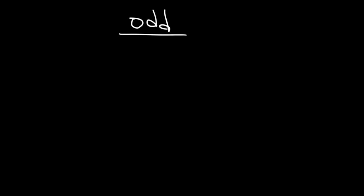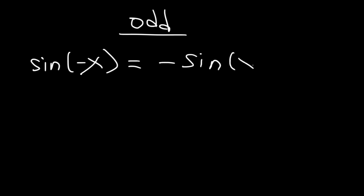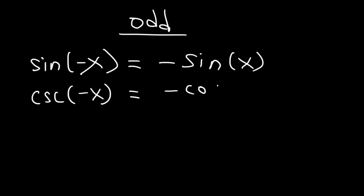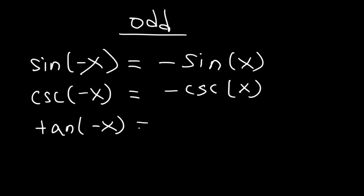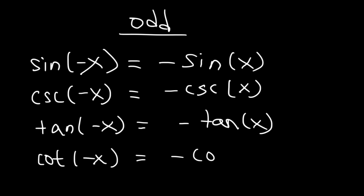So those are the even functions. The other four are odd trigonometric functions. For example, sine of negative x is negative sine x — notice that the sign changes. And cosecant, which is the reciprocal of sine, is also an odd function: cosecant of negative x is negative cosecant of positive x. Tangent is also an odd function: tan of negative x is negative tangent x. And also cotangent of negative x is negative cotangent of x.